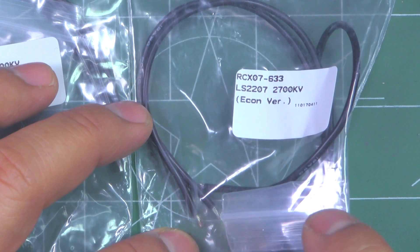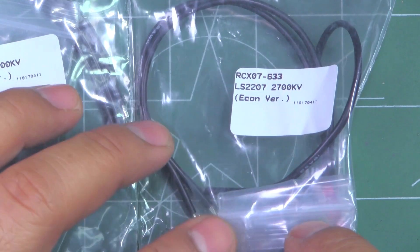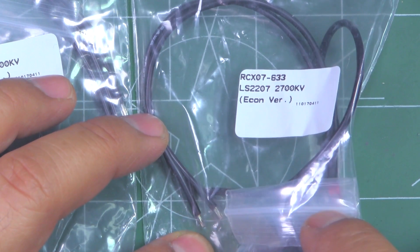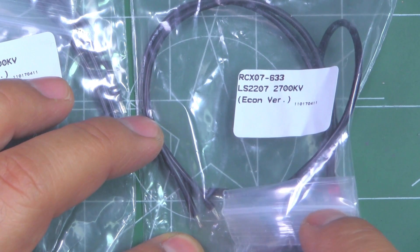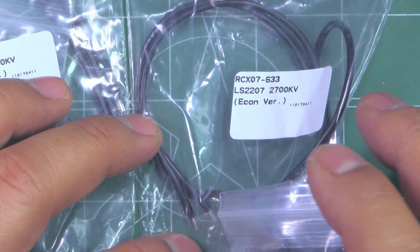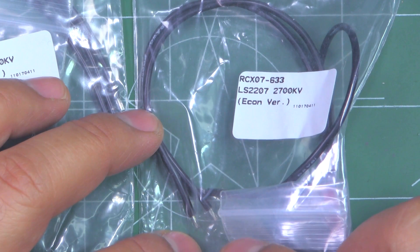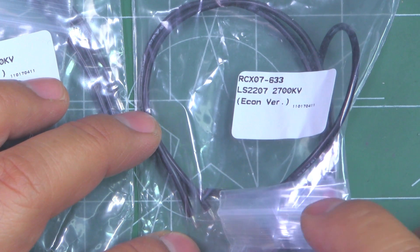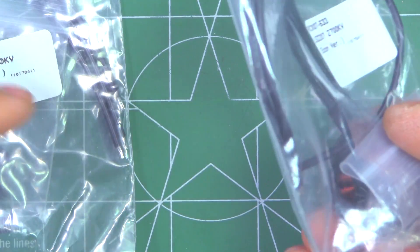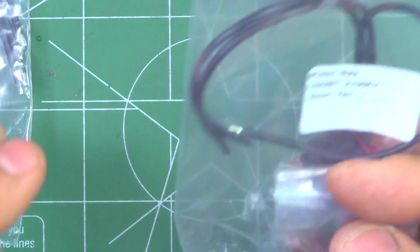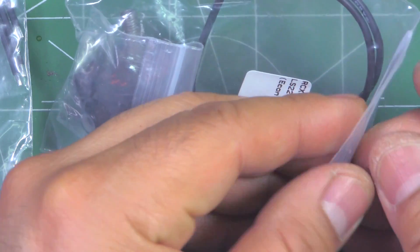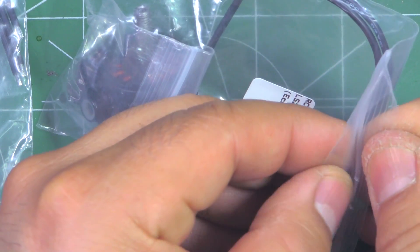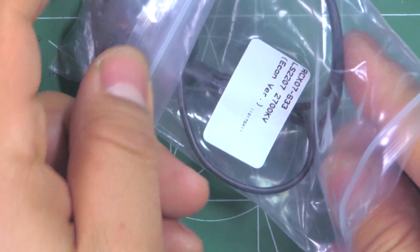These motors are low budget motors from RCX, so they're only $12 with the warranty. And if you opt to go without the warranty, that cuts out $2. So they're only 10 bucks, 10 bucks per motor. So it's like 40 bucks for a set. These are based off the NK2207, which I recently also reviewed and tested.